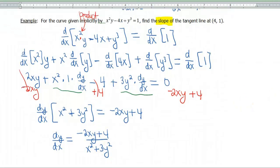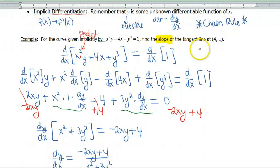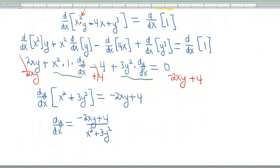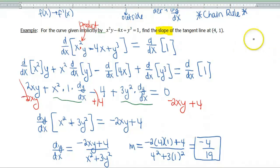But let's go back and read the problem again. It wants the slope of our tangent line at (4, 1). So that means I'm gonna have to go down here now, and to figure out my slope, I'm gonna have to actually plug in those values. So (-2 × 4 × 1 + 4)/(4² + 3 × 1²). Checking out the algebra here, I believe that gives us -4 in the numerator, and 19 in my denominator. So that number there, -4/19, is the slope of my tangent line to this crazy function at the point (4, 1).